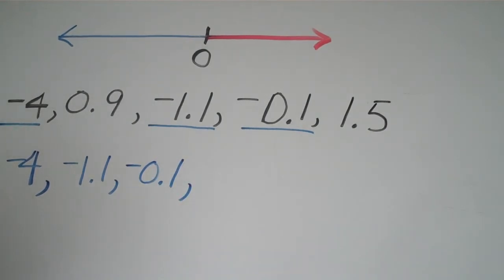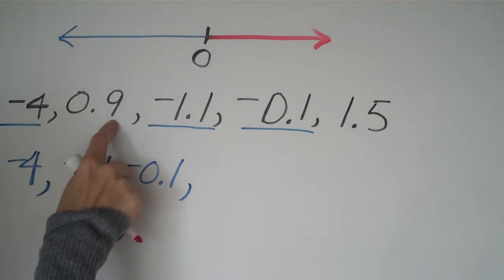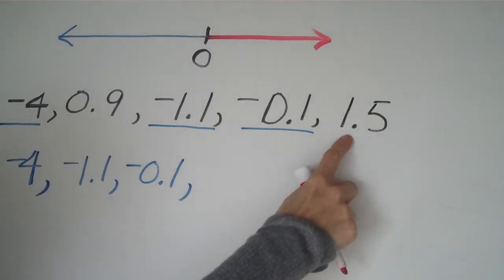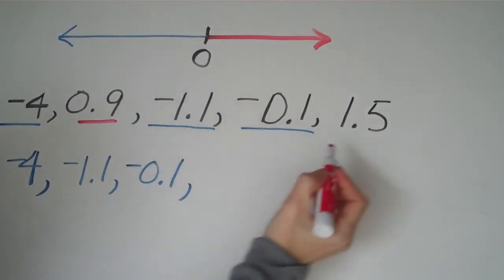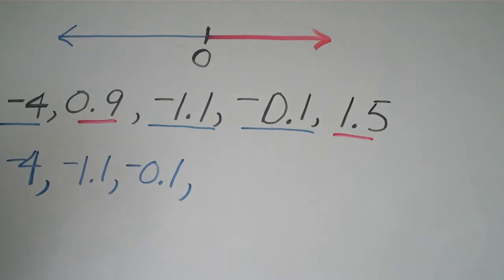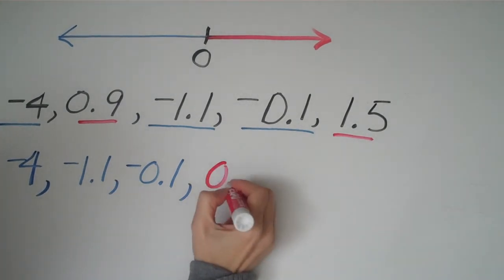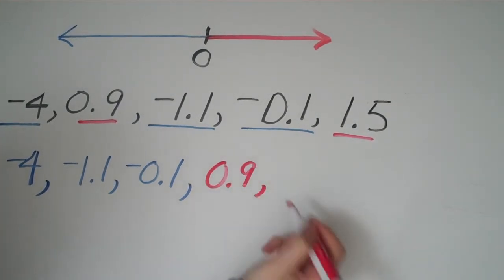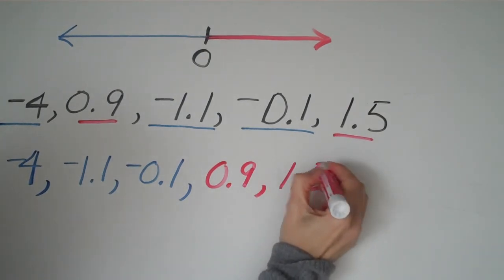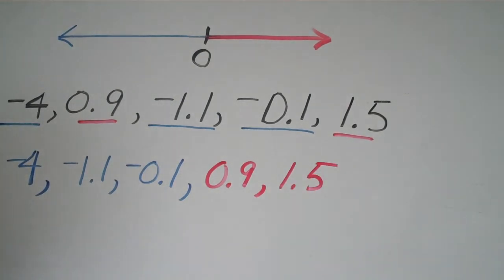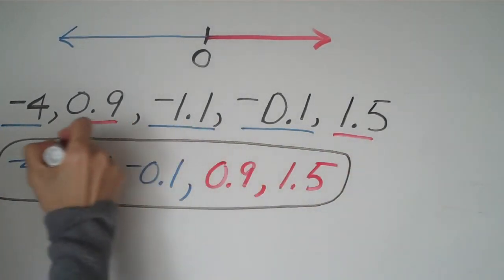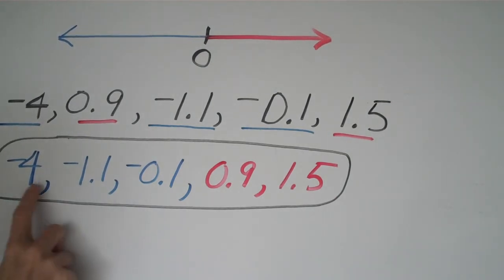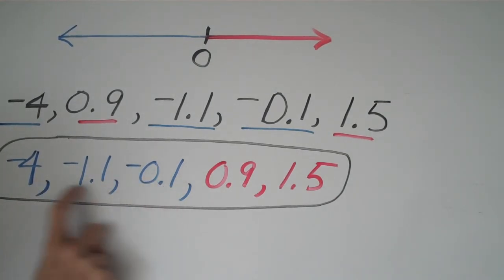The negative numbers are taken care of. The remaining positives are 0.9 and 1.5. Think about money — 90 cents is definitely less than a dollar fifty. So we order those as 0.9, then 1.5. That's it — we've ordered the full list from least to greatest.